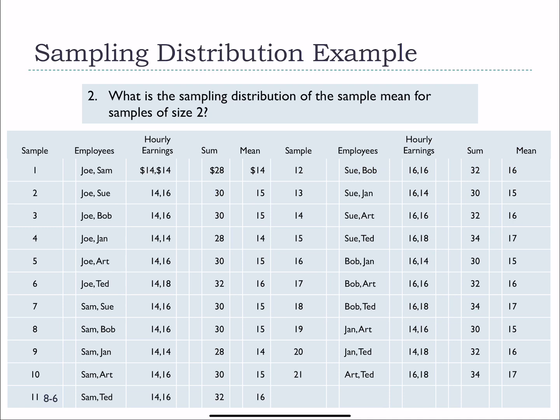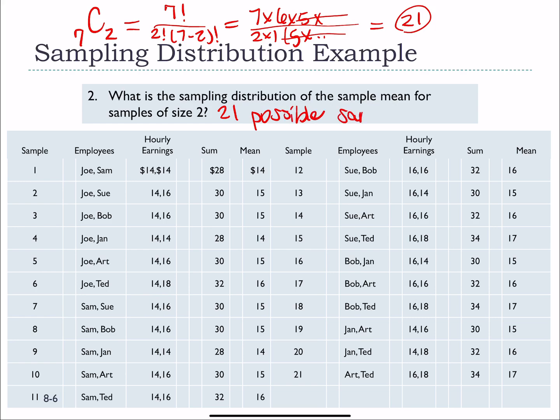The next question says, let's put together the sampling distribution of the sample mean for sample sizes of two. The first thing we have to ask ourselves is, how many samples are possible with a size of two? We're going to use that combination formula. We have seven people in our population. We're pulling a sample size of two. So it's seven factorial over two factorial times the difference of seven and two factorial. If you work this out, that's seven times six times five, and it keeps going. And then down here we'd have two times one. Seven minus two is five. All of that will cancel out. And we end up with an answer of 21. So there are 21 possible samples of size two within this population.